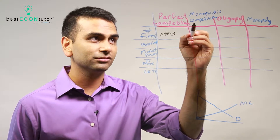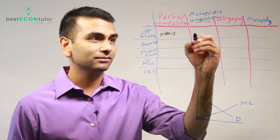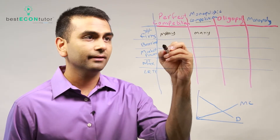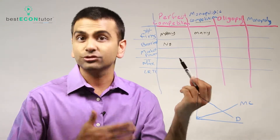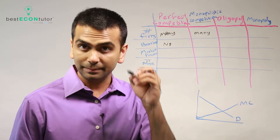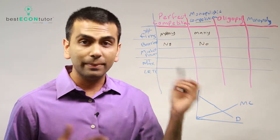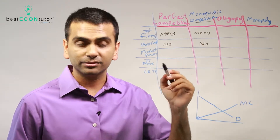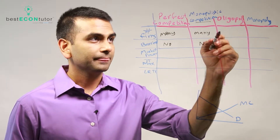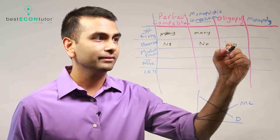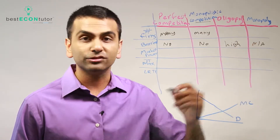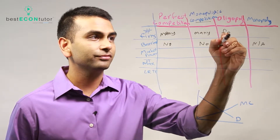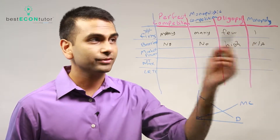Same with monopolistic competition — the 'competition' part means there are many firms. Regarding barriers to entry, there are none in perfect competition, and the same is true for monopolistic competition — anyone can enter, which is why there are many firms. Oligopolies and monopolies, on the other hand, have high barriers to entry, which is why oligopolies have few firms and monopolies have only one.